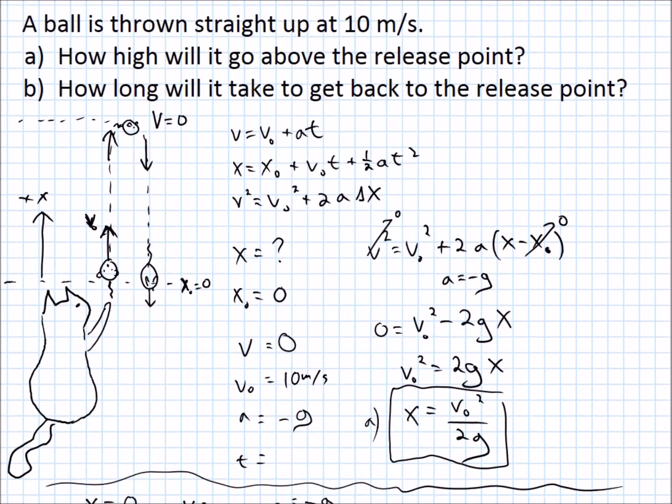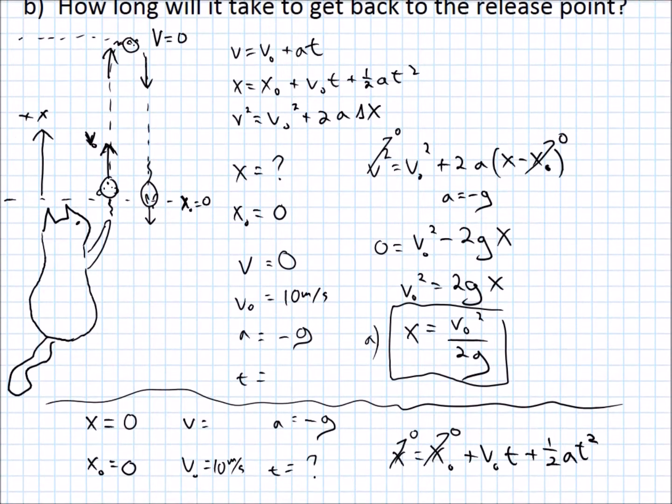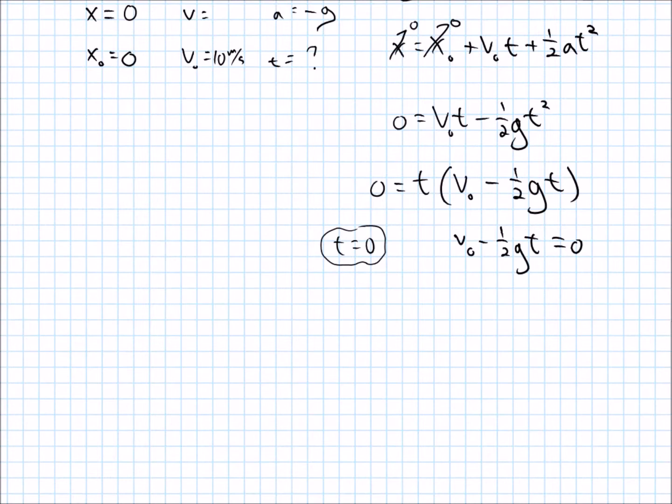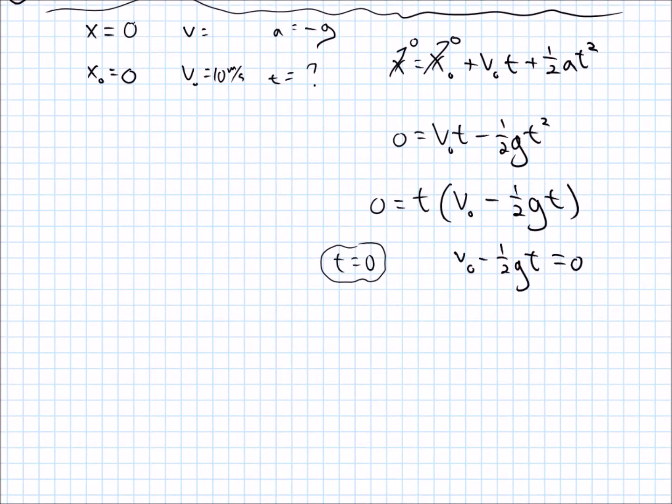The problem was asking, anyways, how long it will take to get back to the release point. So, that wouldn't really be the right answer. We know it's going to be more than zero seconds. It's got to go up, come back down. So, let's see what this other equation can give us. If I rearrange this, one half GT equals V initial, we'll get T equals two V initial divided by G. All right. And so, that should be our answer. I see it is going to be positive two times ten divided by positive nine point eight will give us two point one or something like that seconds. And that sounds like a reasonable amount of time for something to be in the air.